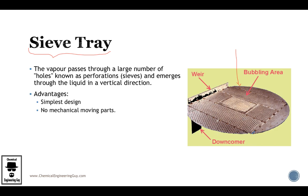The vapor passes through a large number of holes or perforations, which are technically sieves. The liquid flows on the tray, but because of the gas, it will not be allowed to go down through the holes, so the liquid starts accumulating.